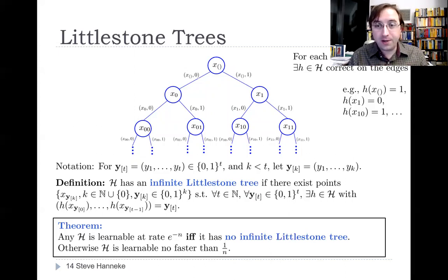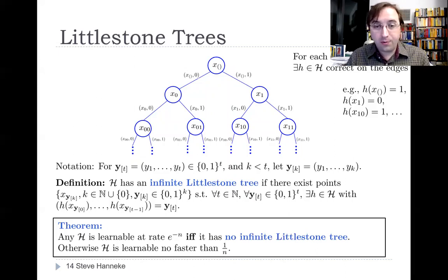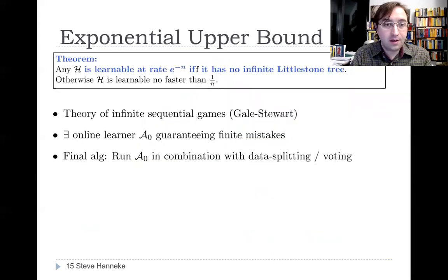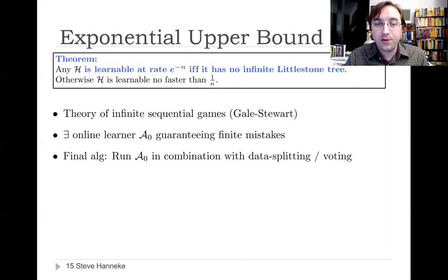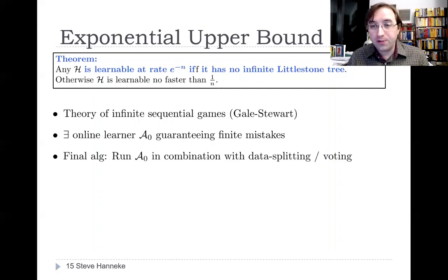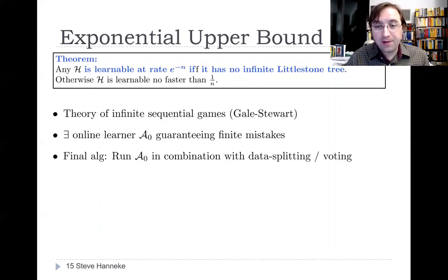I'll give a fairly brief sketch of the key components of the proof of exponential rates for the general case where there's no infinite Littlestone tree. The core component of the algorithm comes from infinite sequential game theory, something called a Gale-Stewart game. This will lead us to an interesting universal version of Littlestone's online learning framework. And then we have to combine this with some statistical techniques to finally get the exponential rates.